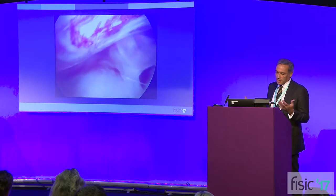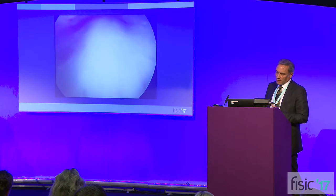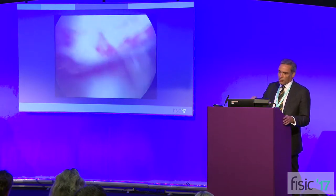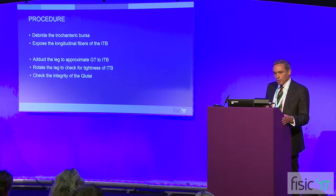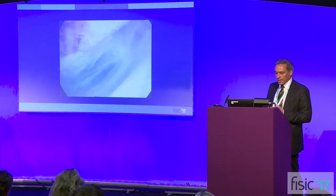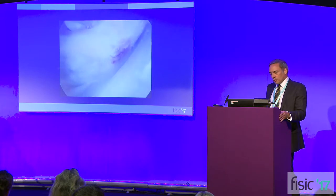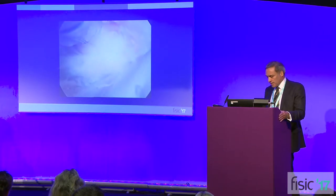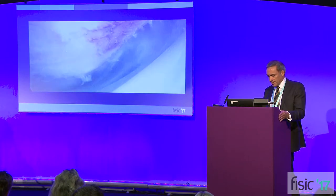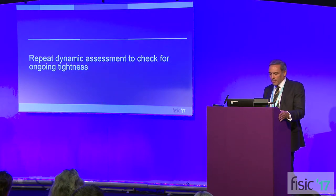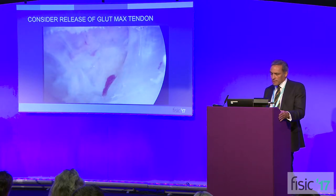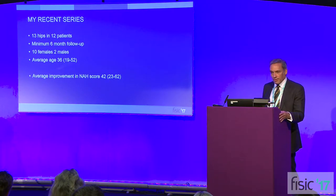This is us inside the trochanteric bursa — you can see the greater trochanter there. Looking back within the bursa, you can see through a little hole the ITB sitting there very nicely. The most distal aspect to look at is the gluteus maximus tendon, because sometimes you do need to do something about that. Always start by debriding the trochanter. You expose the longitudinal fibres of the ITB, then abduct the leg and rotate it to bring the ITB very close to the greater trochanter, mimicking that ITB snapping. You can then see that it is tight, and you might want to release it — I tend to do a transverse release of the ITB.